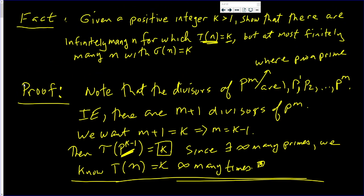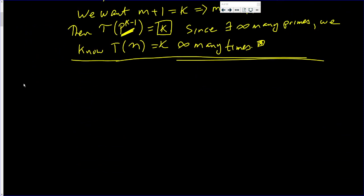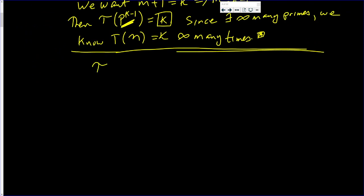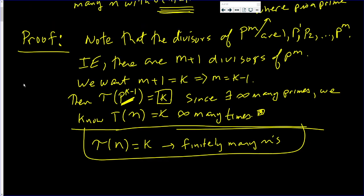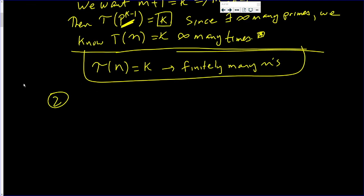Now, I want to show that there's only finitely many of these. Okay. So tau of n equals k. Finitely many. Finitely many ends. That is what I want to prove. If I call this proof 1, proof 2.